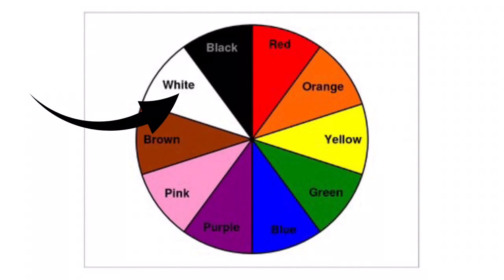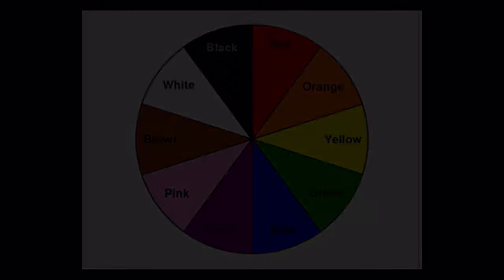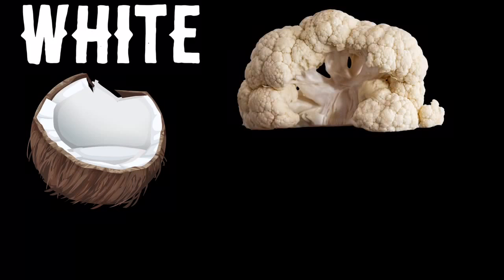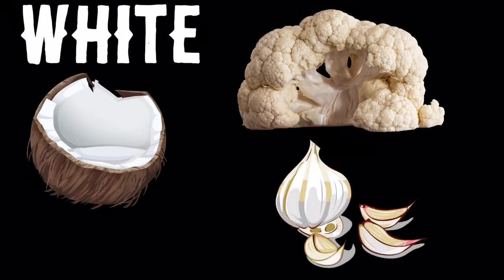This color is white. Which fruits and vegetables are white? White. Coconut, cauliflower, garlic.